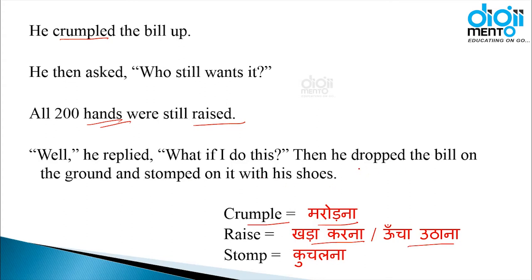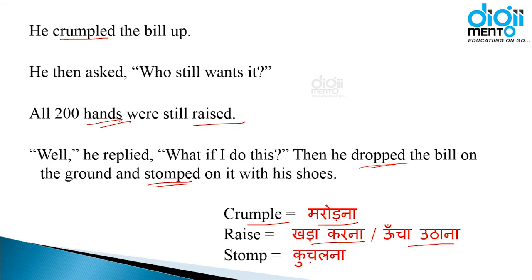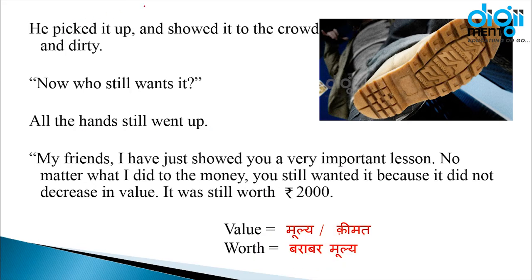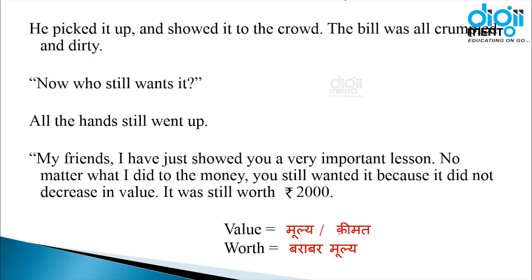Then he dropped the bill on the ground and stomped on it with his shoes — उसने उस बिल को drop कर दिया, यानी गिरा दिया, ज़मीन पर — and he stomped on it with his shoes। 'Stomp' मतलब कुचलना — जब आप किसी चीज़ को नीचे गिराकर जूतों से कुचलते हैं तो उसे 'stomped' कहते हैं। He picked it up and showed it to the crowd. The bill was all crumpled and dirty. 'Now who still wants it?' All the hands still went up.